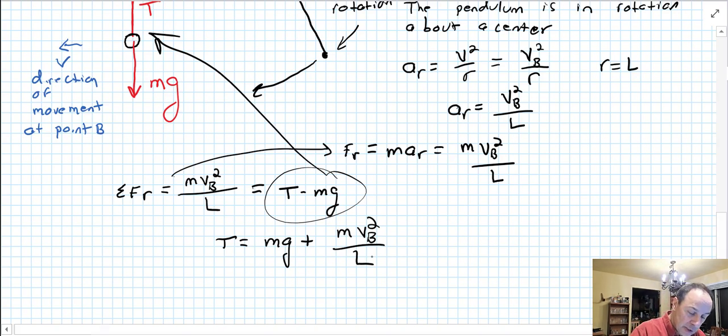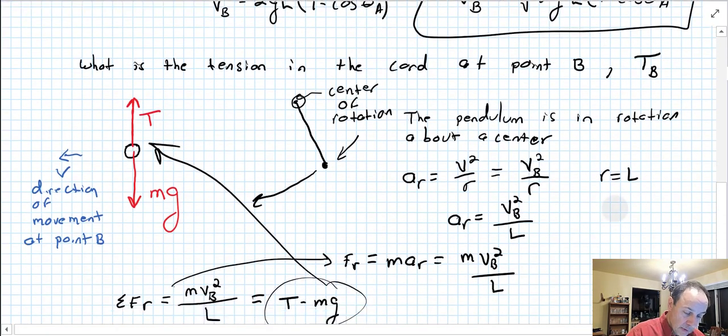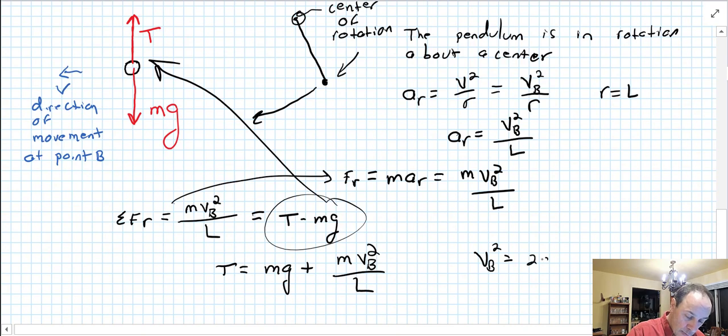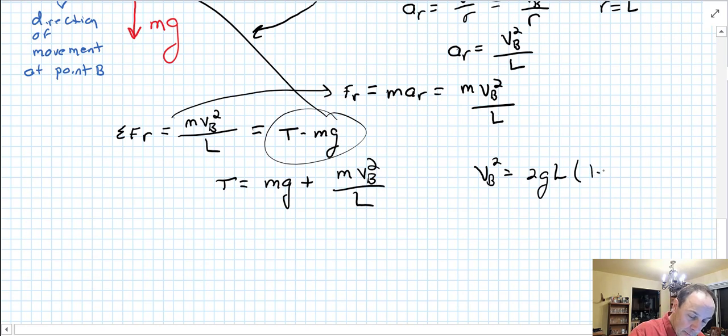So if we rearrange this, that gives us T equals mg plus m v_B squared over L. Now we have an expression for v_B, for v_B squared even from up above: 2gl times 1 minus cosine theta A, cosine theta A. We're going to substitute this into here.